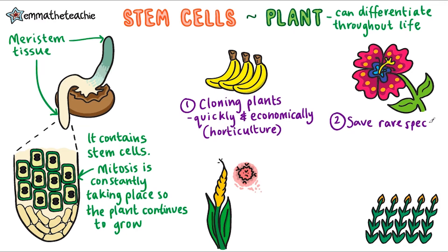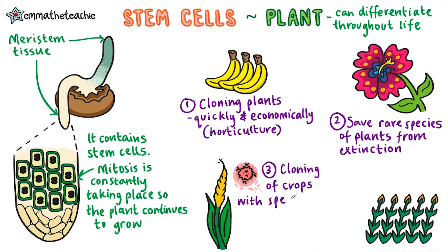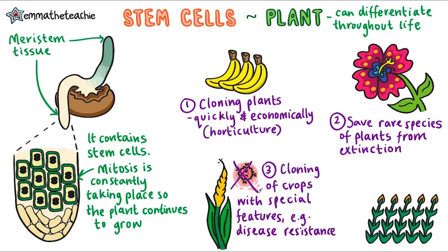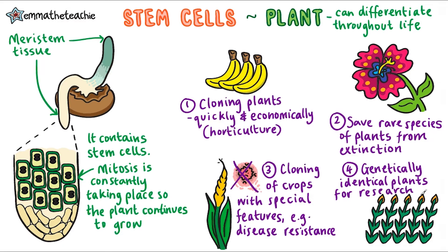We can also use stem cells in cloning rare plants, saving them from extinction — an ever-growing concern in our world. A big benefit for farmers is the ability to clone crops with special features like disease resistance. Lastly, cloning large numbers of genetically identical plants for research is really useful, as the plants are all the same, so the effects of a research procedure can be tested more easily.